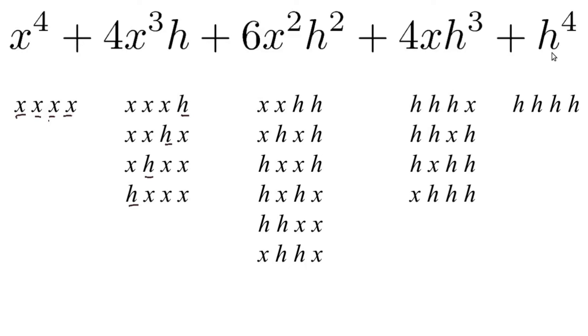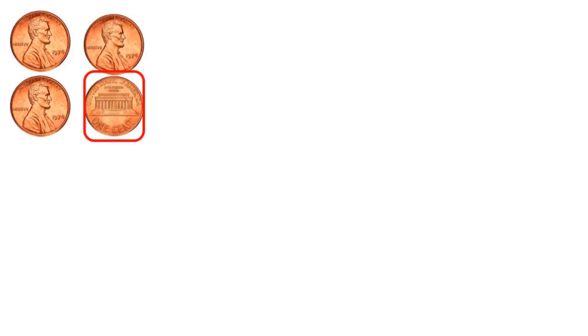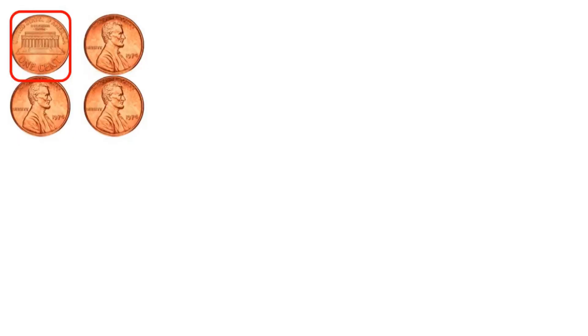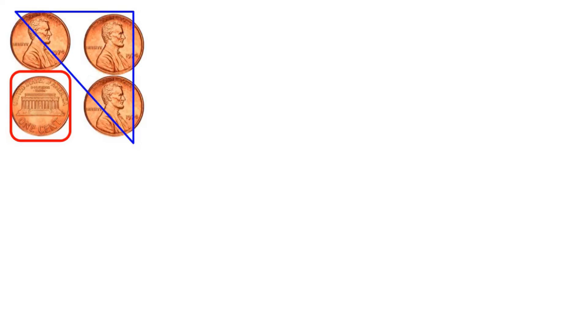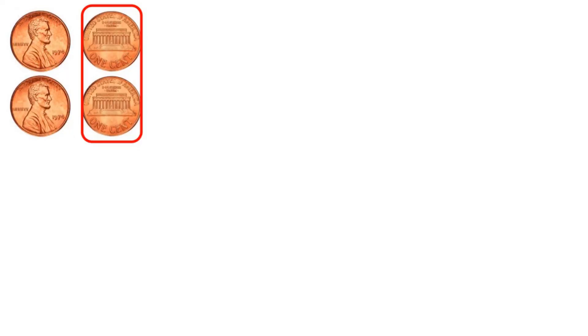This reminds me of something else we can arrange: pennies. Suppose I have 4 pennies and want to know how many ways I can have 0 tails — just 1 way. How many ways can I have 1 tail? It could be this coin, this one, this one, or this one — 4 ways to have 1 tail, and of course 4 ways to have 3 tails. What if I have 2 heads and 2 tails? Looking at how many ways I can pick 2 of the coins to be tails gives 6 arrangements. There are 6 ways to have 2 tails with 4 coins.